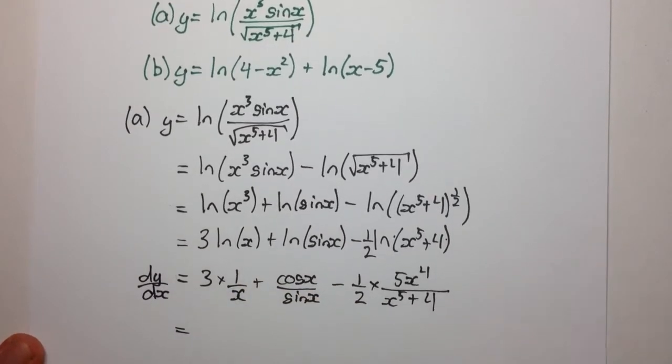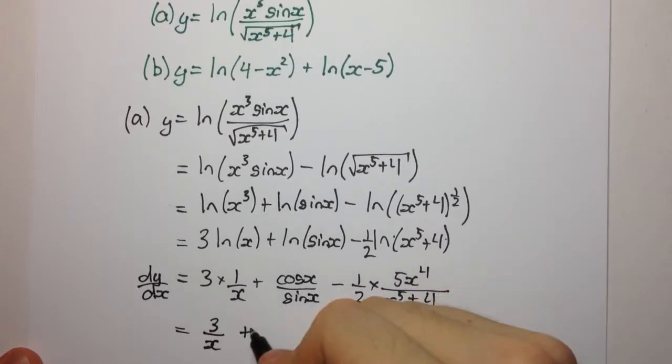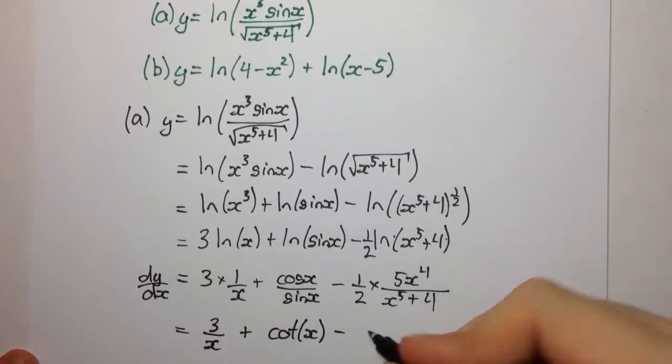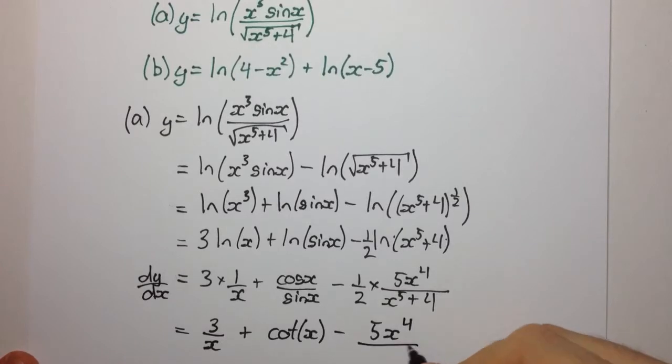Okay, so let's tidy this up a little bit more. We're going to have here, it's just going to be 3 over x plus... well, cos over sin is going to be cot. So cot x, and here, there's not much we can simplify, it's going to be 5x to the 4 over 2 into x to the 5 plus 4.